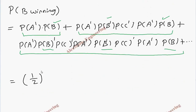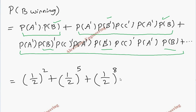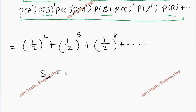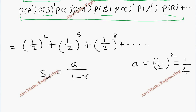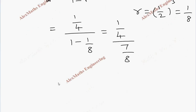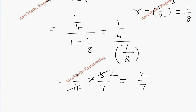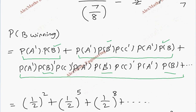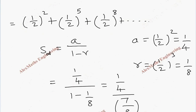When I substitute the values, all the values are 1 by 2. So the first term becomes 1 by 2 whole square. The second term has 5 factors giving 1 by 2 whole power 5. The next term has 8 factors giving 1 by 2 whole power 8, plus dot dot dot. This is an infinite GP where the formula is A by 1 minus R. The first term is 1 by 2 whole square which is 1 by 4, and R, by dividing second term by first term, is 1 by 2 whole cube which is 1 by 8. So this is 1 by 4 divided by 1 minus 1 by 8, which is 1 by 4 divided by 7 by 8. Taking the reciprocal and multiplying, after cancelling, this is 2 by 7. So P of B winning is 2 by 7.